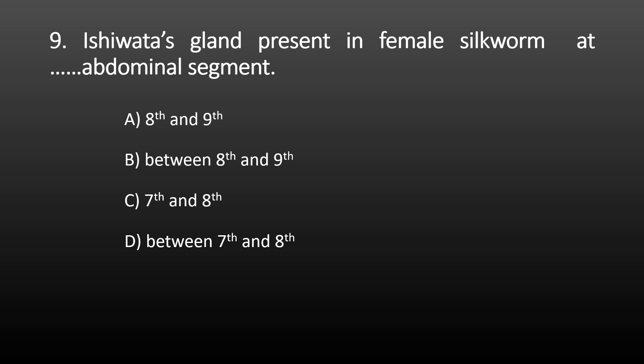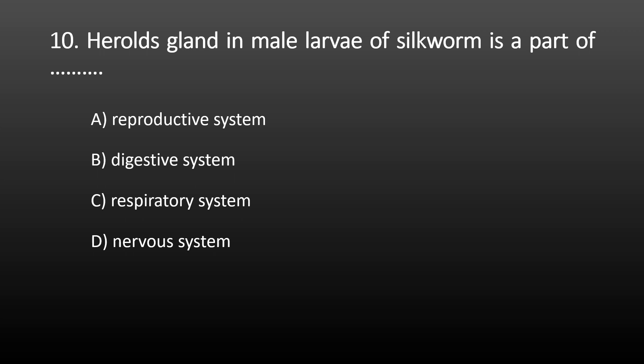Next MCQ: the Ishivata gland is present in female silkworm larvae at which abdominal segment? Comparing male and female silkworm larvae, this Ishivata gland is present only in female silkworm larvae. This gland is present at the eighth and ninth abdominal segment. The correct option is eighth and ninth abdominal segment. The Ishivata gland is a part of the reproductive segment.